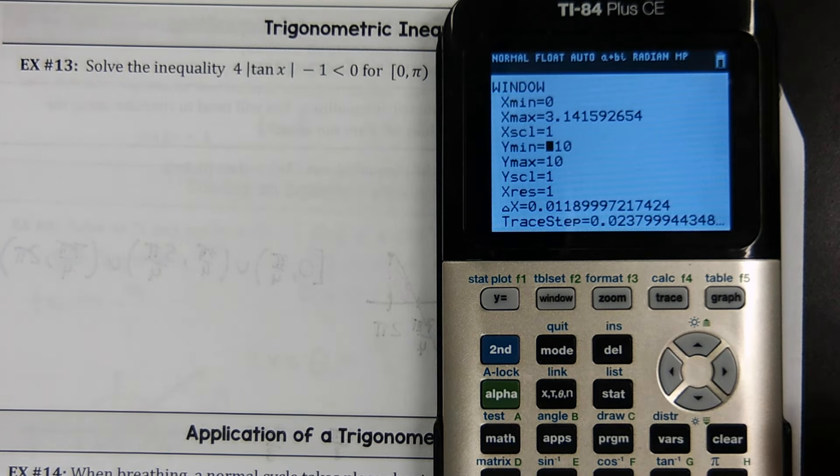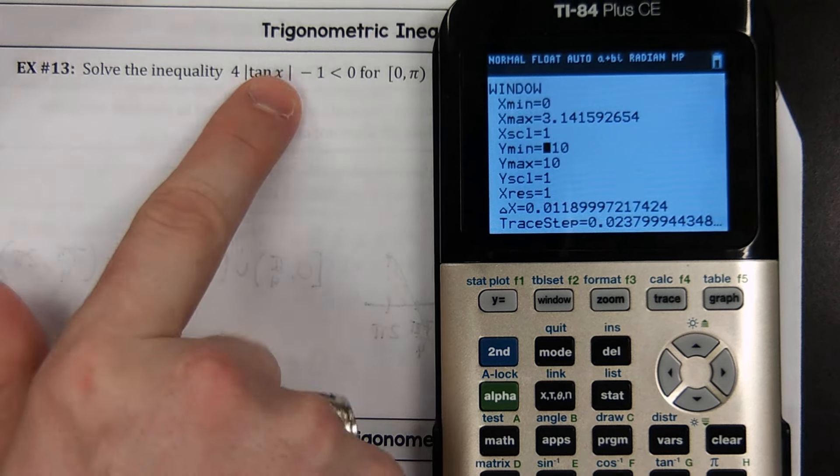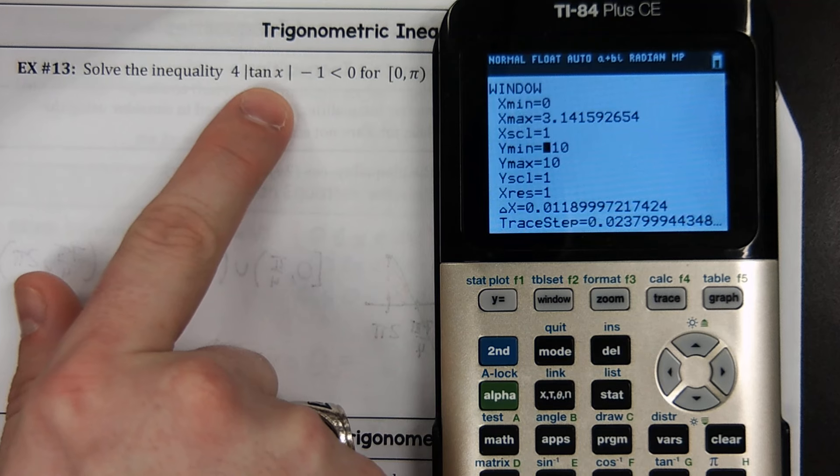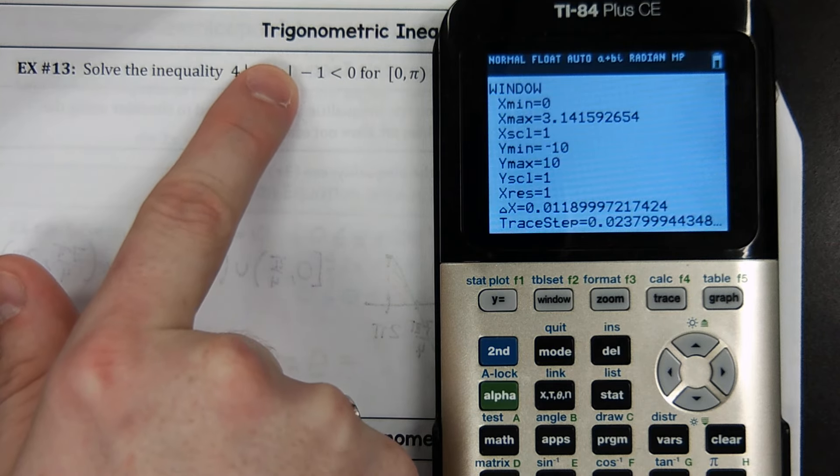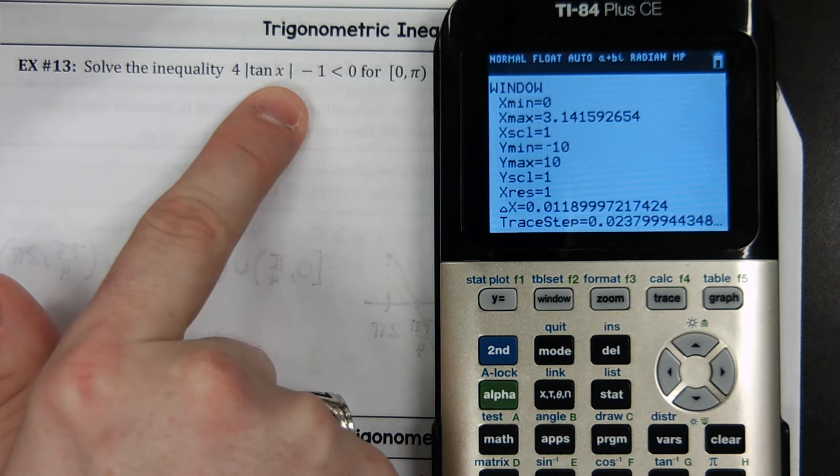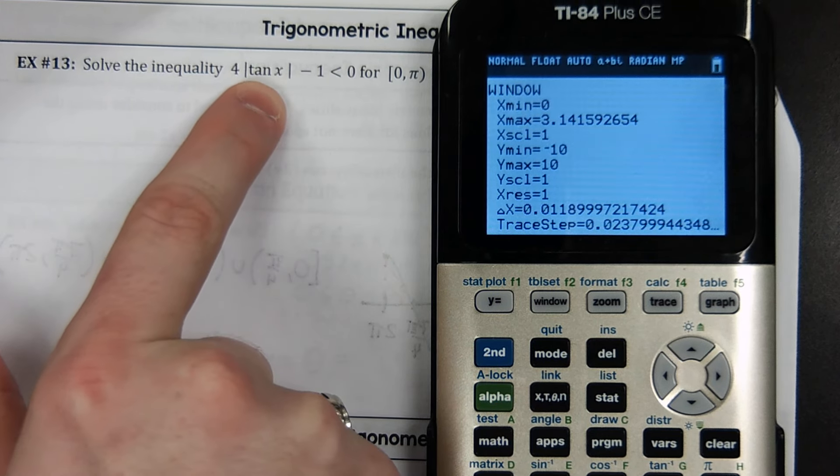Okay, let's be smart about our window. We know that we're only going from 0 to pi. Scoot to your window. And it goes 0 to pi. Pi being right there. The scale really doesn't matter because we're just going to sketch this thing. So I don't really care about the scale. I'll leave it as 1's. The range for a tangent graph is all real numbers.